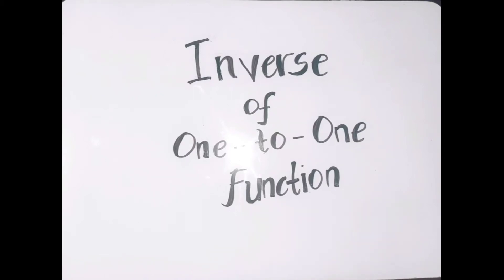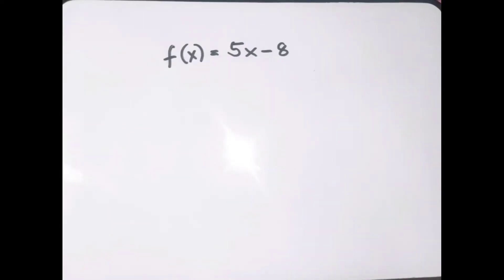In this video, I will show you how to solve the inverse of a one-to-one function. Our first example is f of x equals 5x minus 8. The first thing to do is to change f of x to y, giving us y equals 5x minus 8.